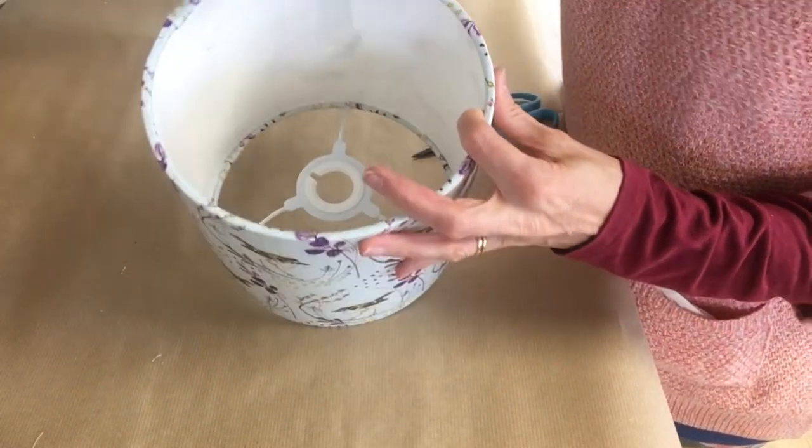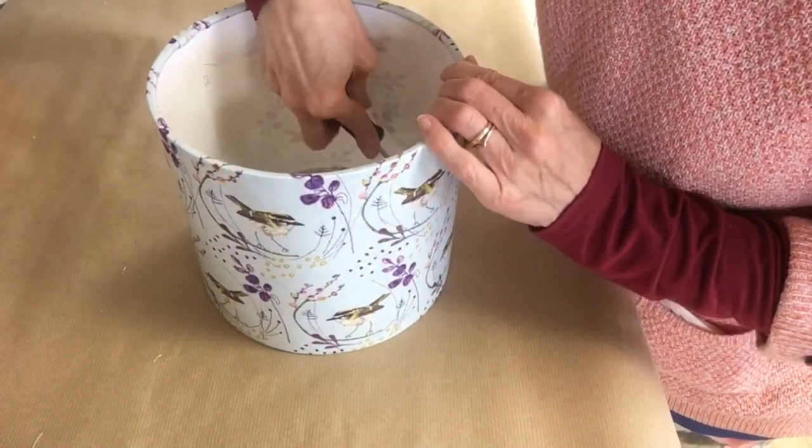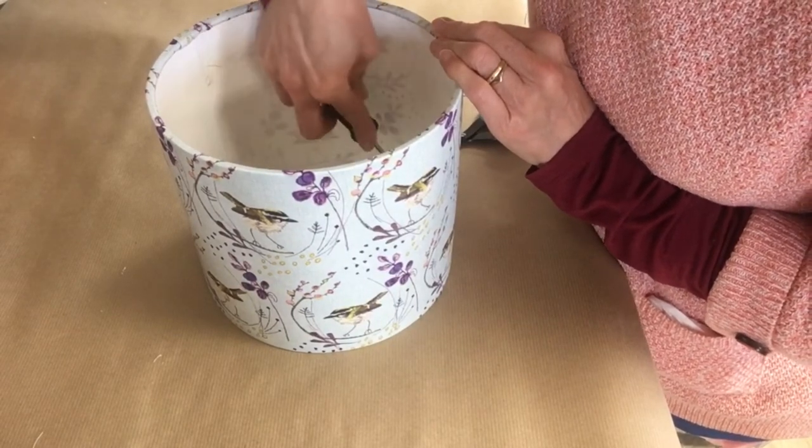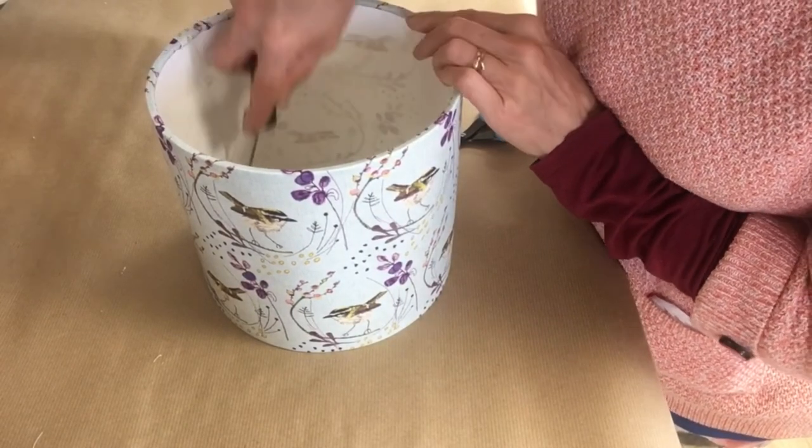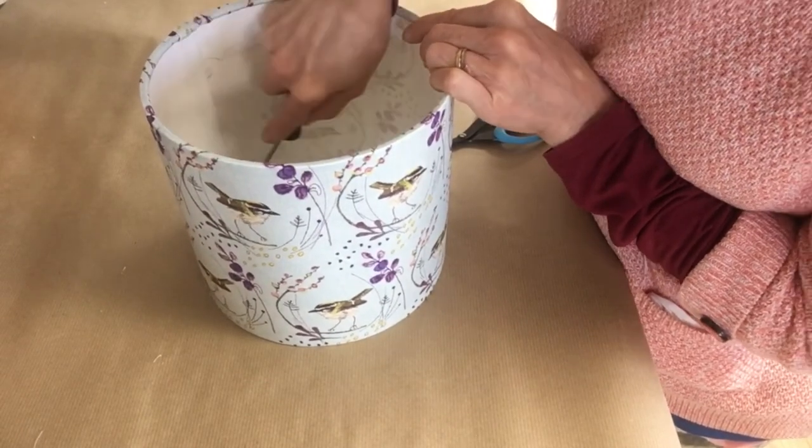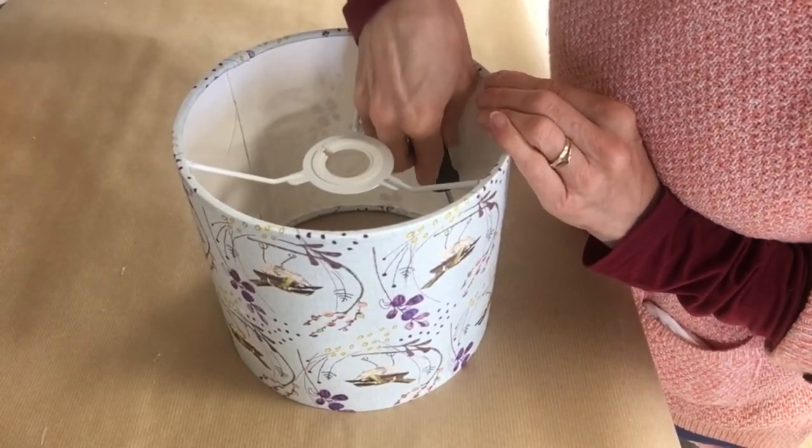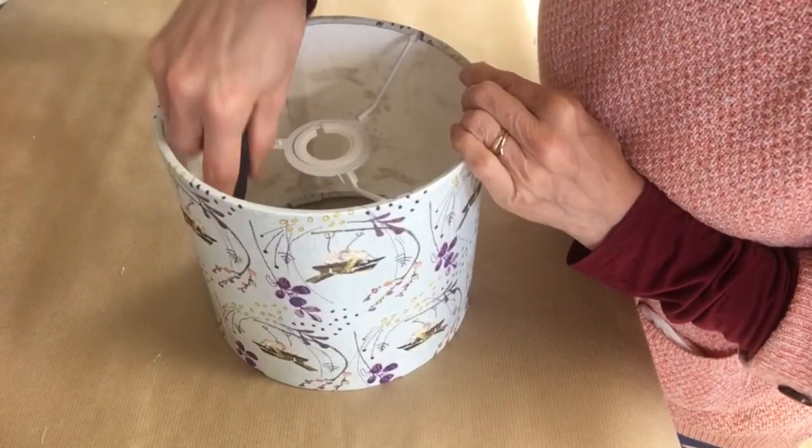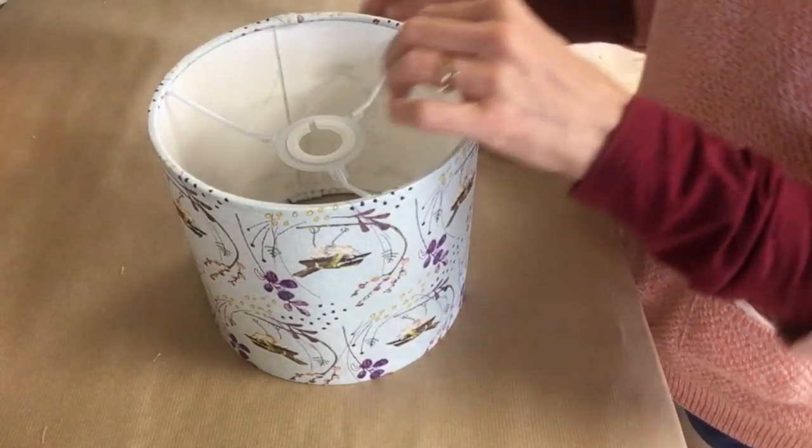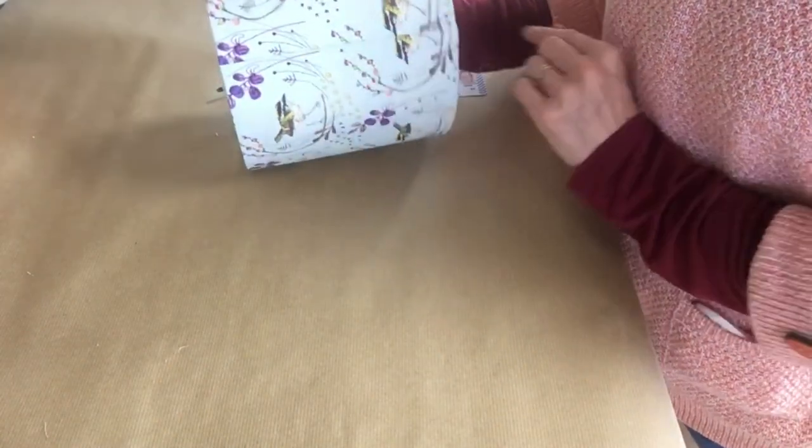Now you want to check that it's looking good on the inside, so you can run the screwdriver around that edge, pushing in any little bits that might not be quite firmly under. So there we have a nice neat edge with the stitching on.